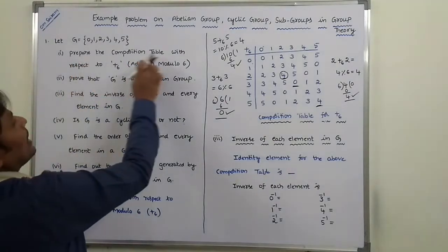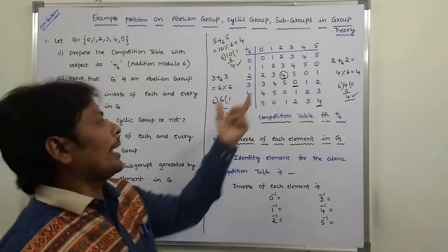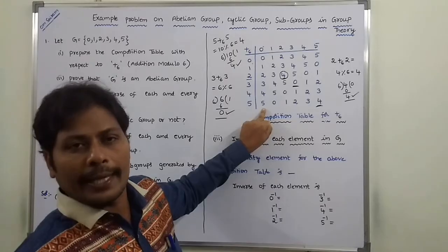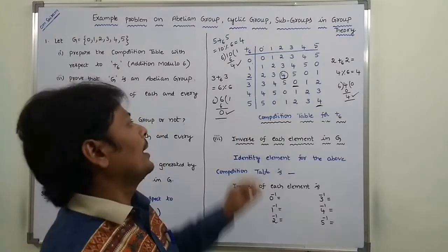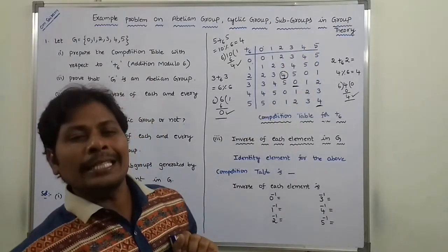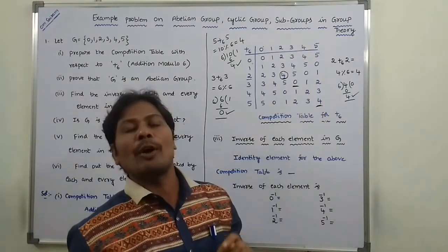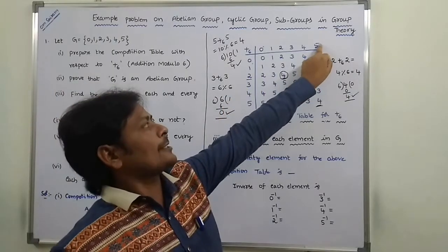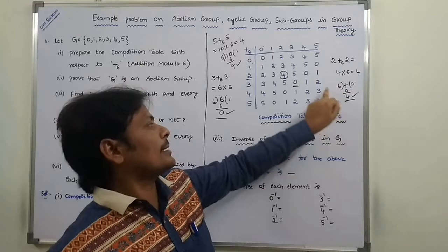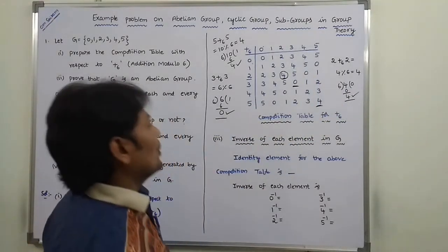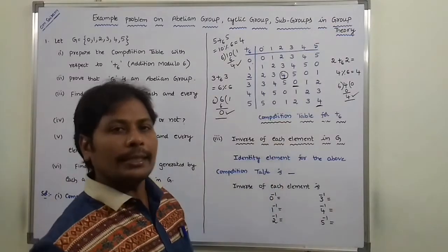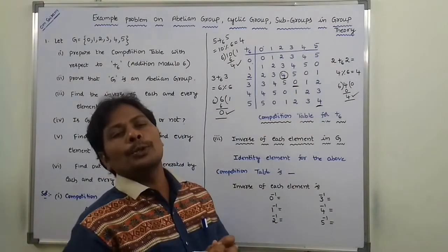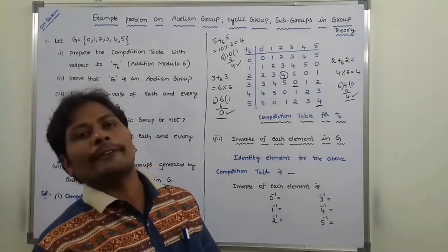After constructing the composition table, we have to identify the identity element for group G. How do we identify the identity element? We check each and every column in the composition table.